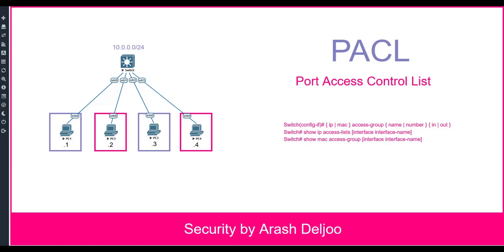What is port ACL, or PACL? Port ACLs are similar to router ACLs or RACL. With router ACL, we configure ACL on one router to control traffic entering or leaving an interface. Port ACL are similar to router ACL but are supported on physical interfaces and configured on layer two interfaces on a switch. In router ACL, we configure ACL on the layer three interface of a router, but with PACL, we configure it on the layer two interface of a switch.